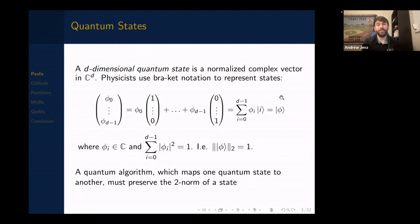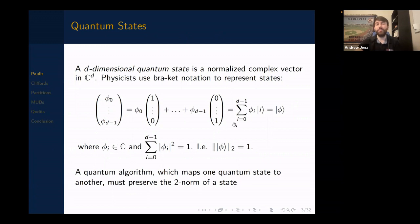We begin with quantum states. A quantum state is a D-dimensional normalized complex vector in C^D. I use the Dirac (bra-ket) notation, which I find easiest for quantum algorithms research. If you have a complex vector φ₀ to φ_{D-1}, you can split that into standard basis vectors. The ket |i⟩ indicates the i-th standard basis vector, and we write |φ⟩ as shorthand. These states are normalized: the two-norm equals one, or the sum of the norm-squared of the entries equals one. A quantum algorithm maps one quantum state to another and preserves the two-norm.